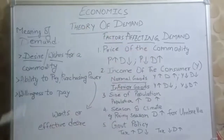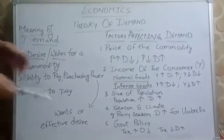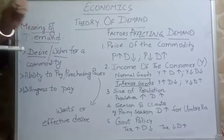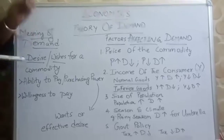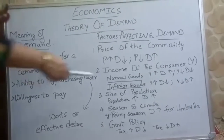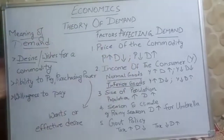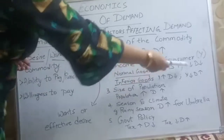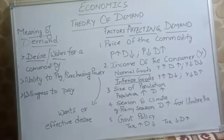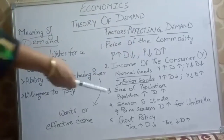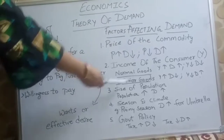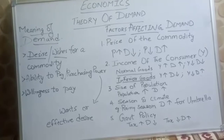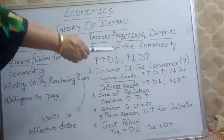The second point is income of the consumer, represented by Y. It involves two types of goods: normal goods and inferior goods. Normal goods are good quality goods; inferior goods are low quality goods. When income is higher, demand for normal goods is more. If income is less, demand for normal goods is less. Similarly, for inferior goods, if income is high, we will not purchase low quality goods, so demand will be less.